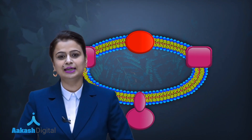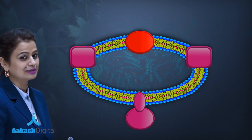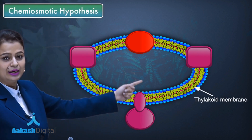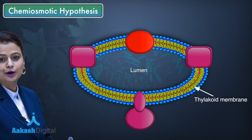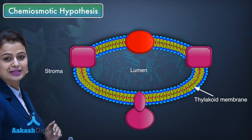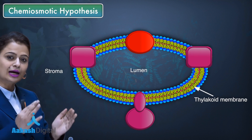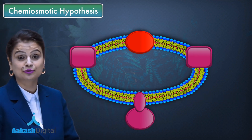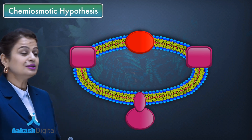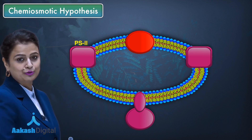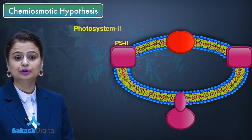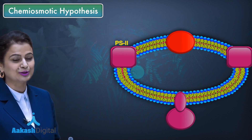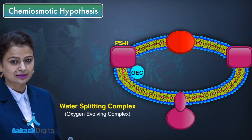Let us discuss this in detail. This is a single thylakoid. Inside is the thylakoid lumen, and the outer side represents the stroma. In the thylakoid membrane, several complexes are present which are involved in the electron transport system. This is Complex 2, or photosystem 2, and on the inner side there is attachment of the water-splitting complex.